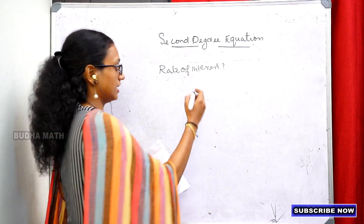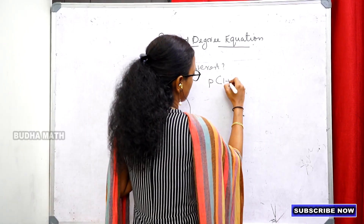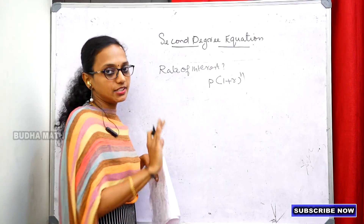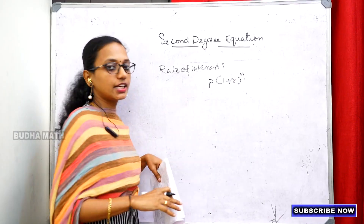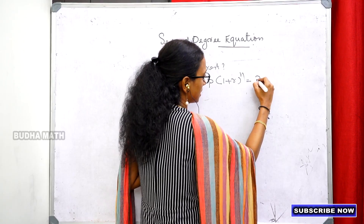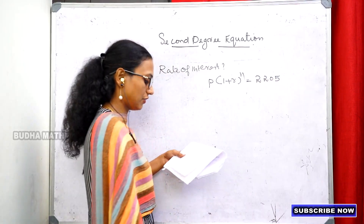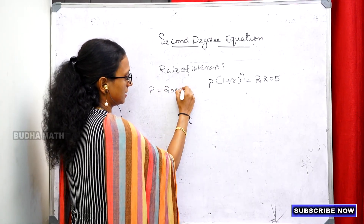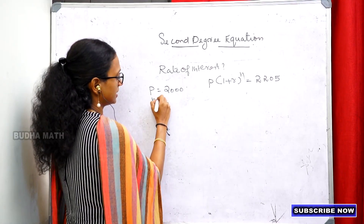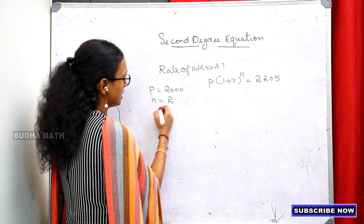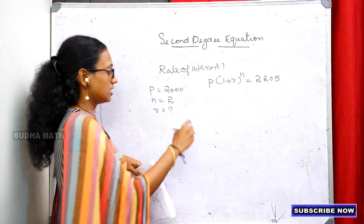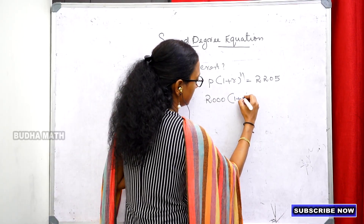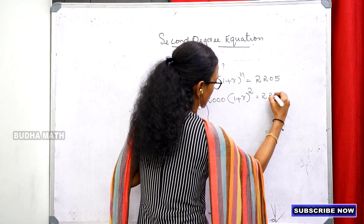The compound interest formula is A equals P into (1 plus r) all raised to n. Here P equals 2,000, n equals 2, and A equals 2,205. So 2,000 into (1 plus r) squared equals 2,205.